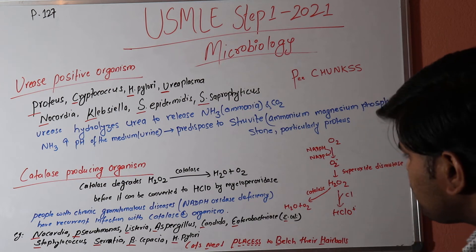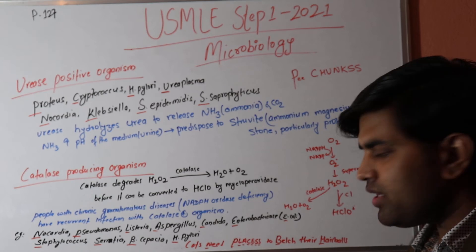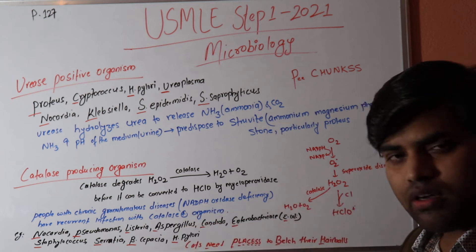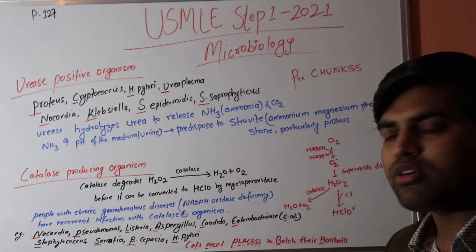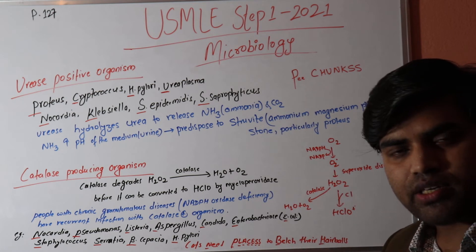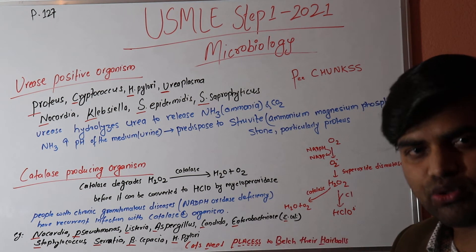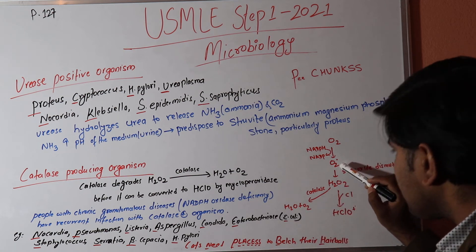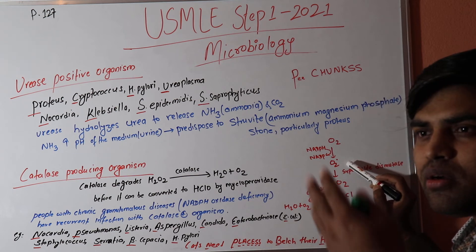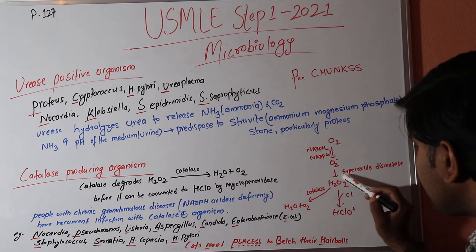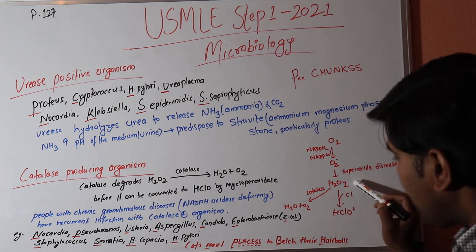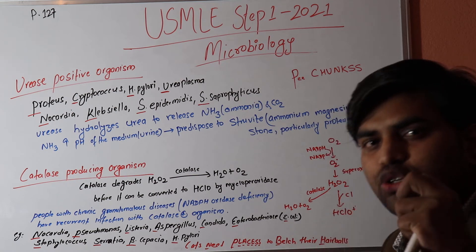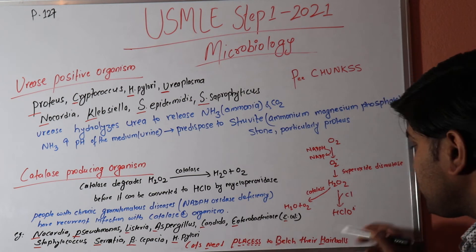When bacteria infect us, they respire and produce oxygen as a metabolic byproduct. The macrophage utilizes this bacterial oxygen — converting it via superoxide dismutase into hydrogen peroxide, then into hypochlorite — and uses it to kill those very same bacteria. So the macrophage uses the bacteria's own oxygen to destroy them.